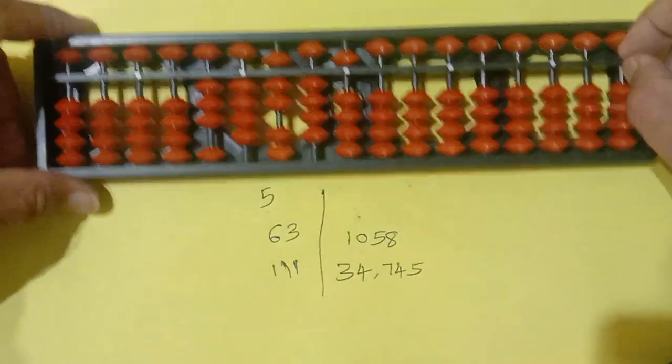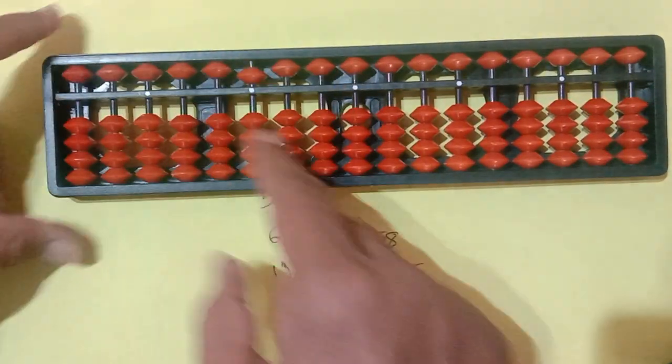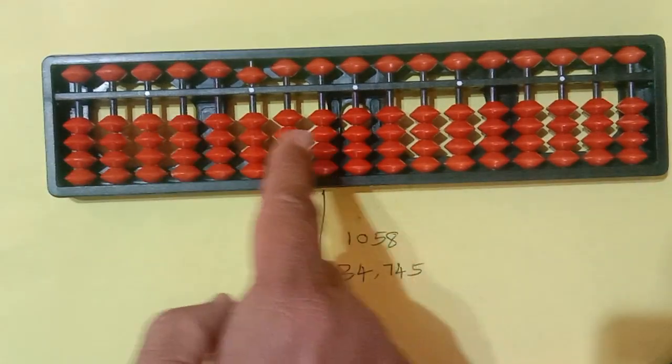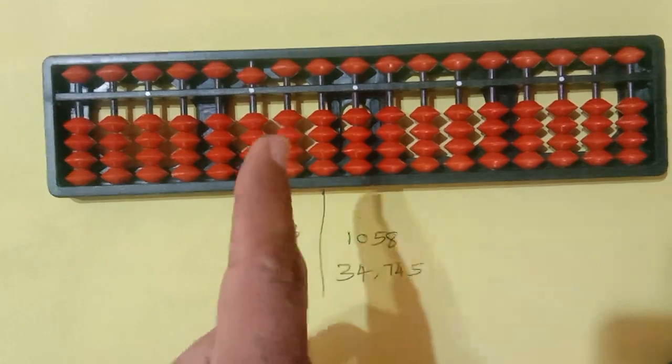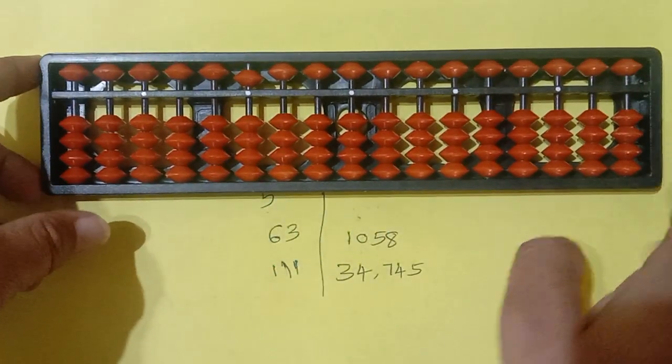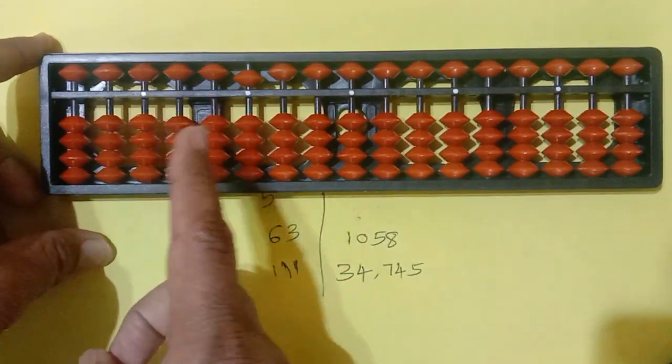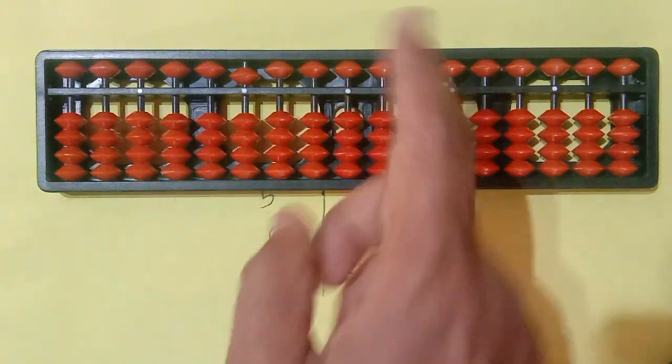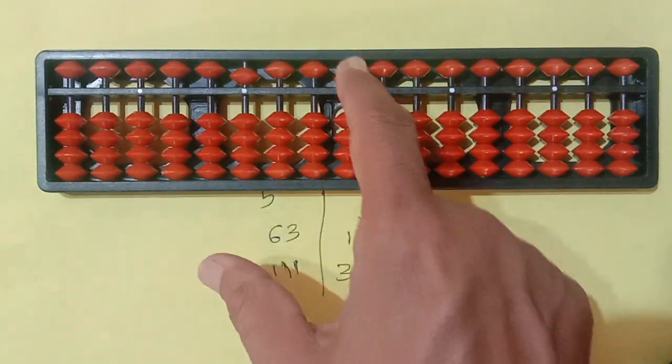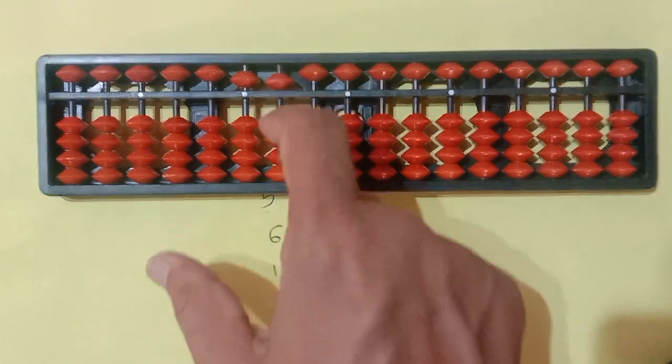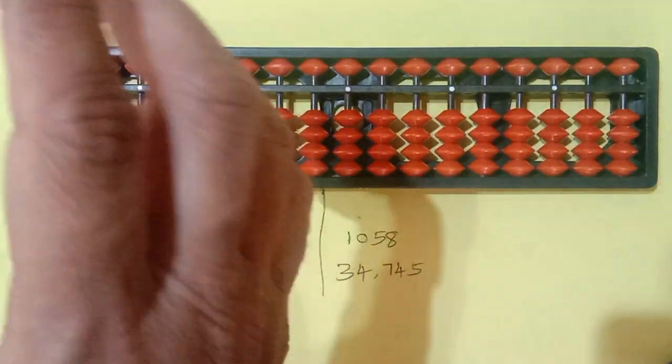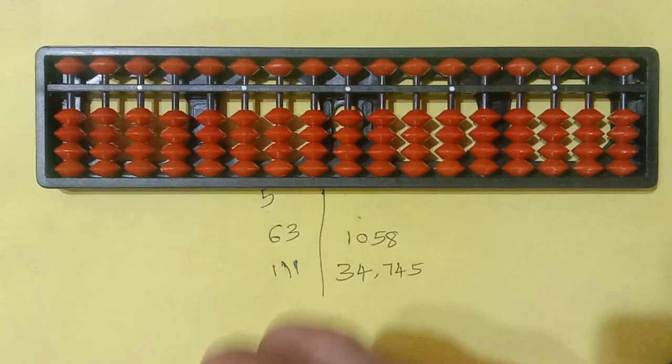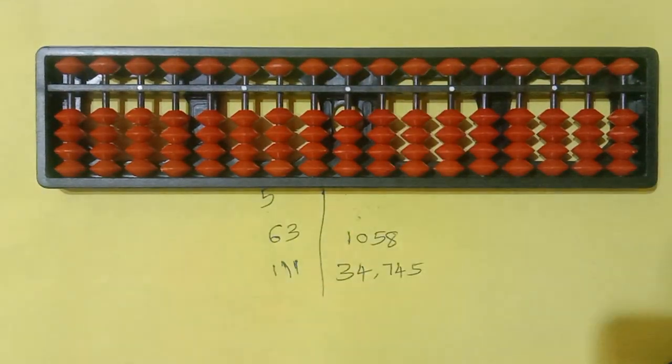Like this, we have to continue. One more thing you have to remember. Lower beads always 1, 2, 3, 4. 10, 20, 30, 40. Like this 100, 200, 300, 400. Then 1000, 2000, 3000, 4000. Like this. Upper beads always here, this is 5, 50, 500, 5000. Like this, all 5, 5, 5 only. Always it will give a value of 5. Alright, I hope all of you understood this one.